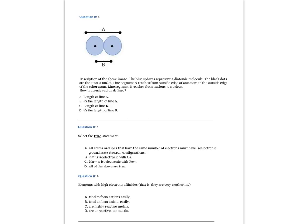How is atomic radius defined? The answer is D, half the length of line B.